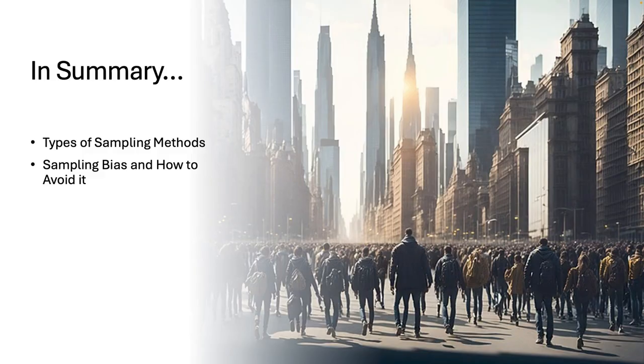Alright, so to wrap it up. Today, we talked about the four major sampling methods: random, stratified, systematic, and cluster. And we also covered sampling bias, what it looks like, and how to avoid it. And choosing the right sampling method and avoiding bias is what makes your research solid, correct, reliable, and important. It's like the foundation. If your sample is off, your whole study could crumble. But now you know the basics. You're in a much better position to do it, and to do it right.